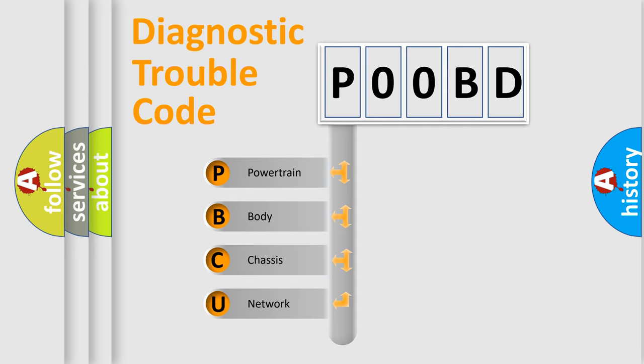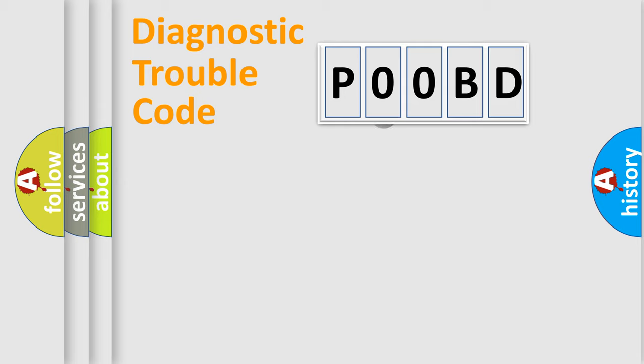We divide the electric system of automobile into the four basic units: Powertrain, Body, Chassis, Network. This distribution is defined in the first character code.